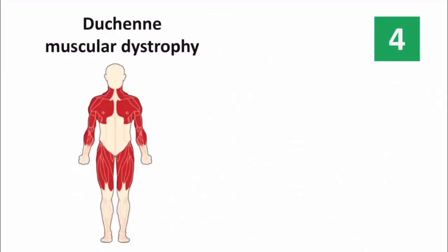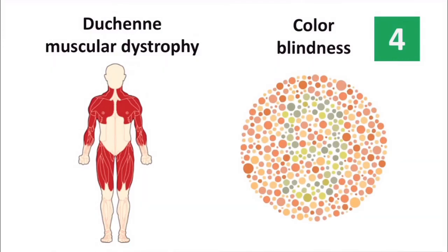Duchenne muscular dystrophy is an example of X-linked recessive disorder. Here, the patient has progressive muscular weakness. Another example is color blindness. Here, the patient usually cannot differentiate between red and green.